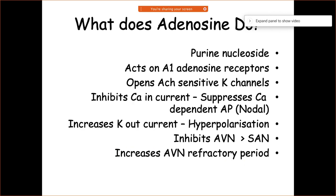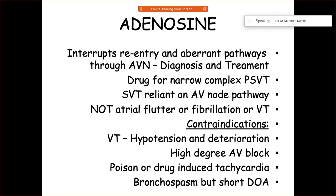The key mechanism of adenosine involves acting on adenosine receptors, opening the ACh-sensitive potassium channels and inhibiting the slow inward calcium current. This suppresses the calcium-dependent action potential. Through hyperpolarization, it affects primarily the AV node rather than the SA node.